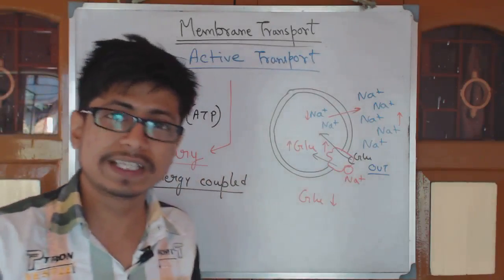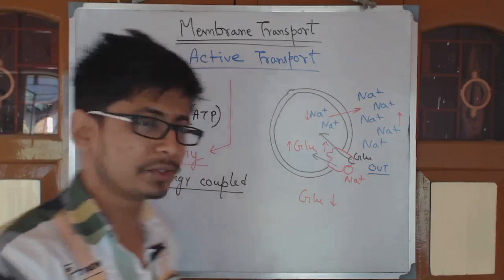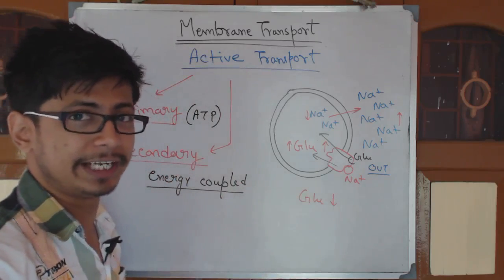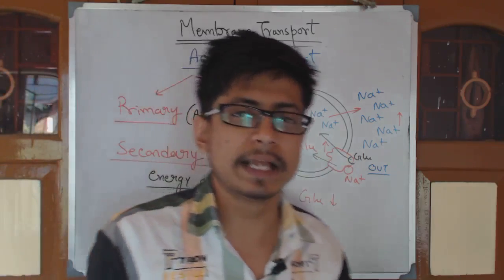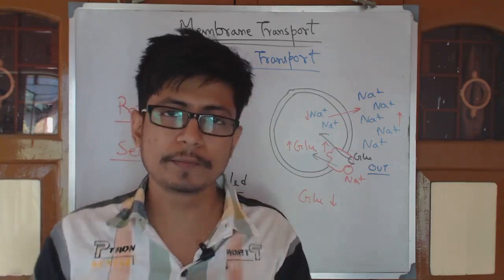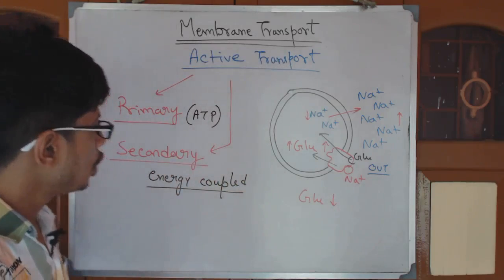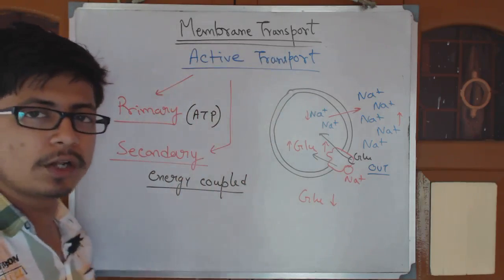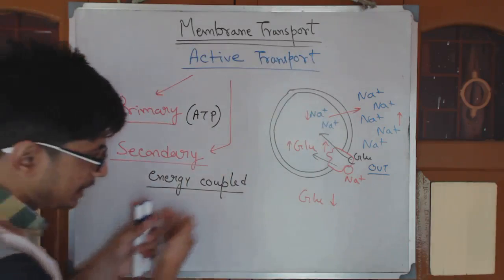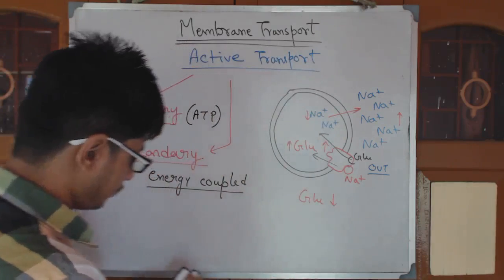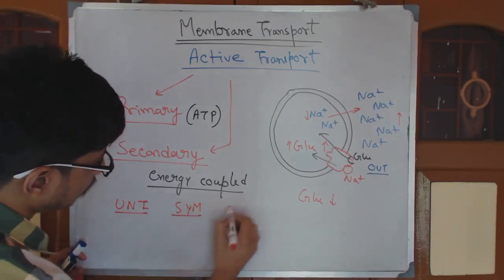We use the energy coupled from a molecule transporting down the gradient to transport another molecule against the concentration gradient. There are multiple examples — sodium and proton, proton pumps like H⁺. Based on the idea of active transport, we can also have multiple different modes: uniport, symport, and antiport.